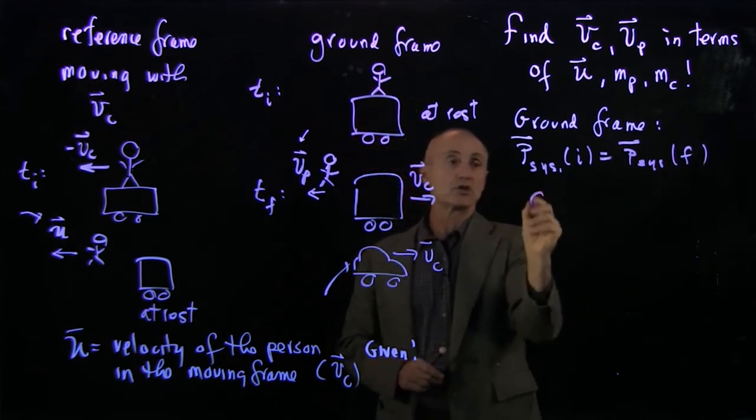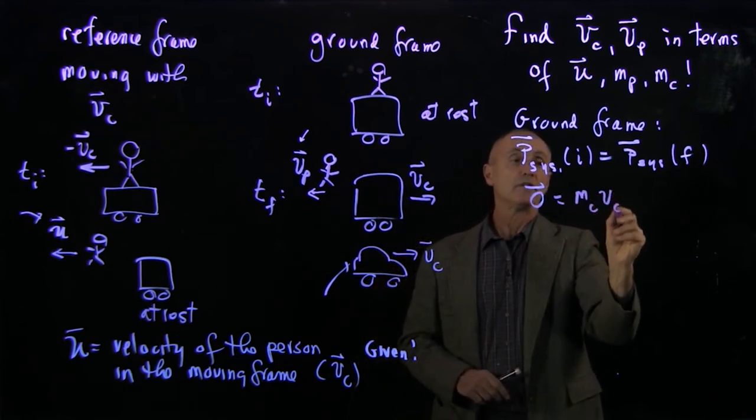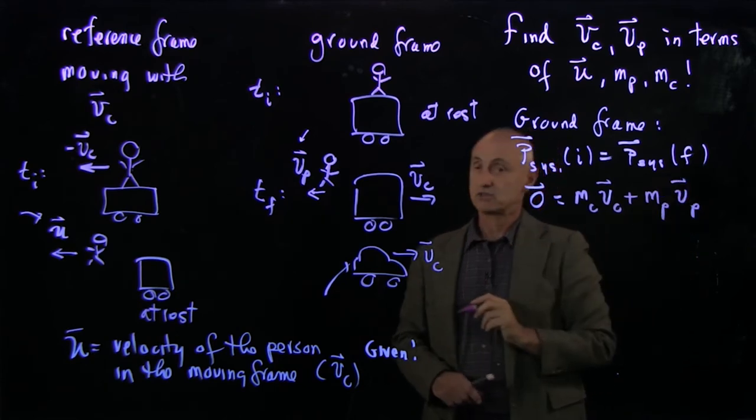In our initial picture, nothing is moving. And in our final picture, we have mcart vcart plus mperson vperson is zero.